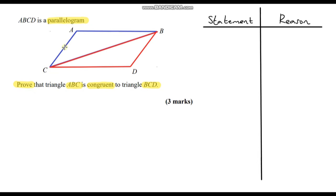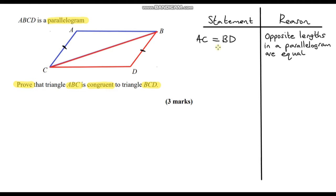The first thing I can see is that length AC is exactly the same as length BD. So I can say AC equals BD. How do I know that? It tells us in the question that ABCD is a parallelogram, so opposite sides of a parallelogram are equal. That's our reason. We've found one pair of corresponding lengths that are equal.